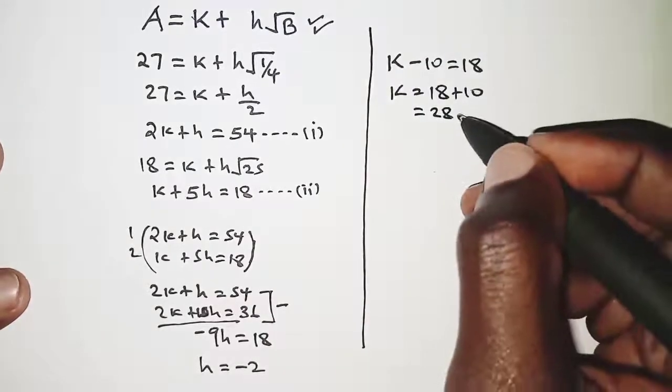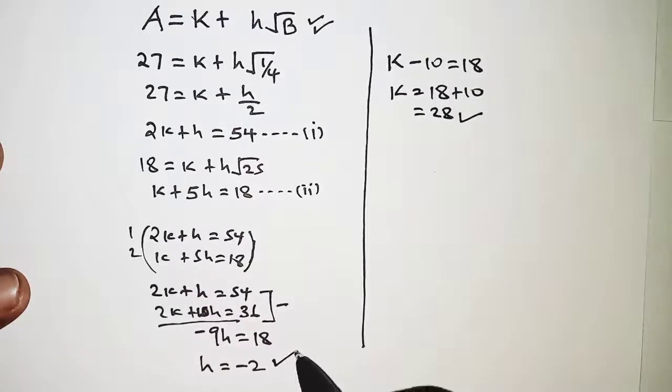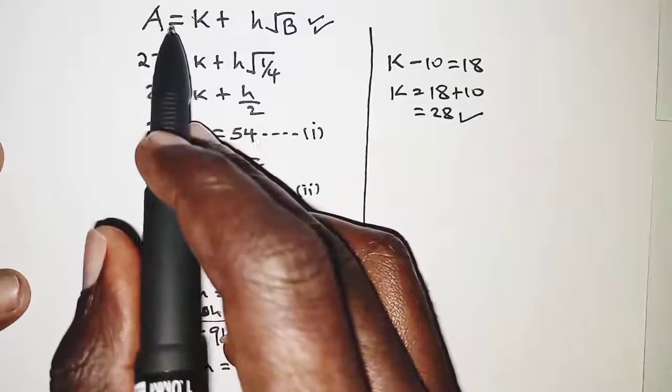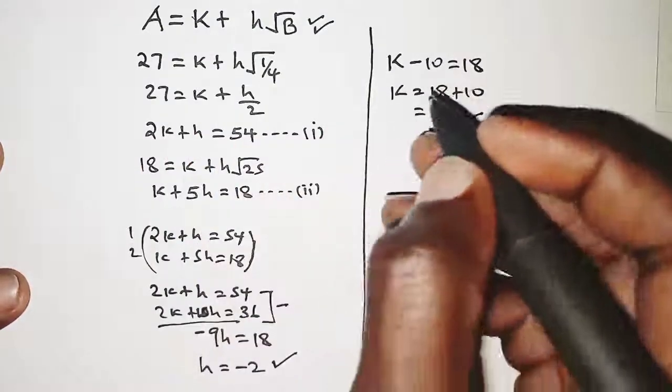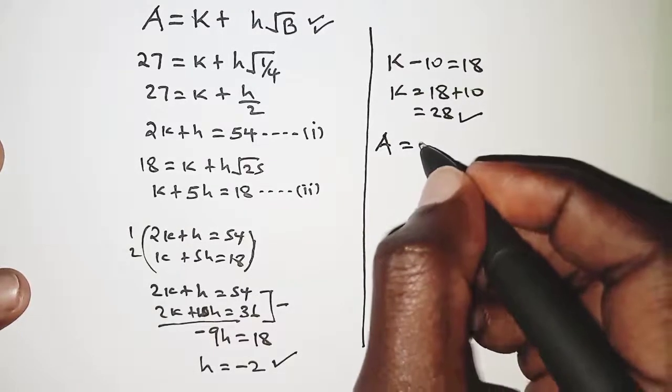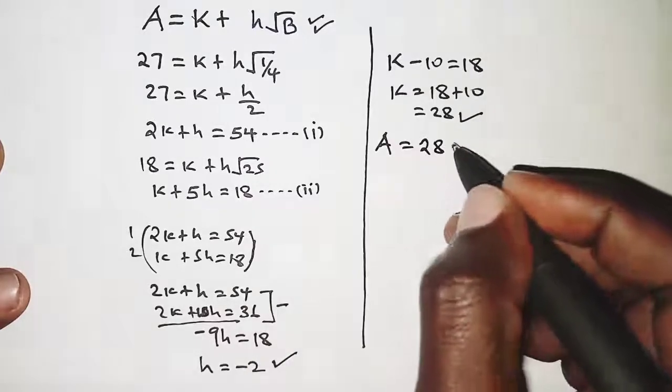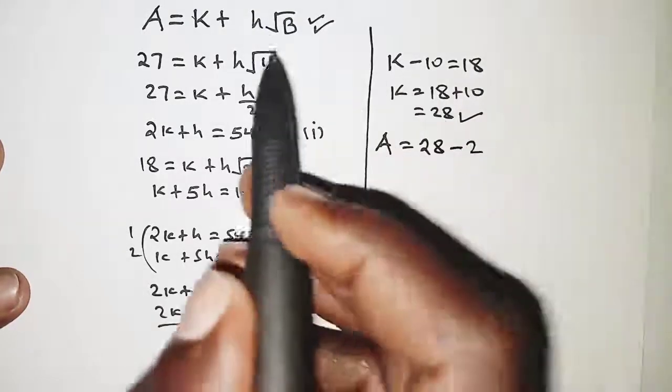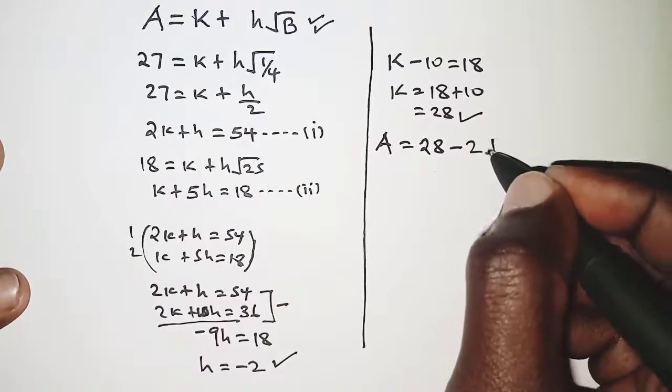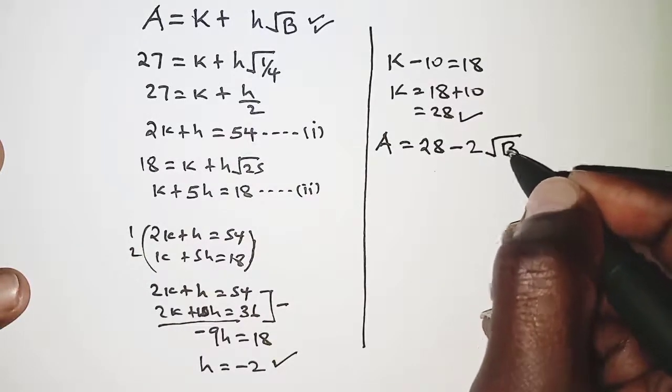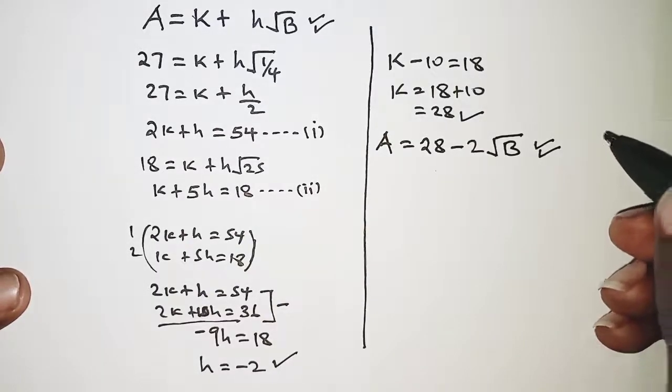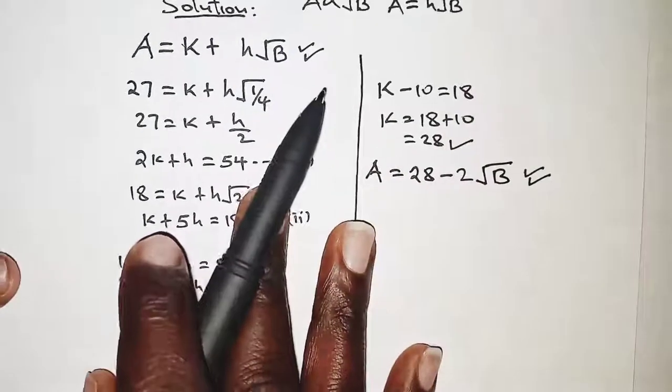With the value of k and the value of h, we can now rewrite the law connecting A and B, which is A is equal to k, and the value of k is 28, minus 2 for h. So A equals 28 minus 2 root B.